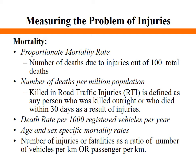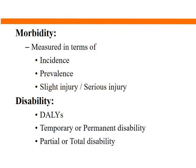Another mortality metric is the number of injuries or fatalities as a ratio of the number of vehicles per kilometer or passengers per kilometer. The number of vehicles per kilometer represents traffic density — the more dense the traffic, the greater the chances of injury. Similarly, a vehicle carrying more passengers increases the chances of injury.